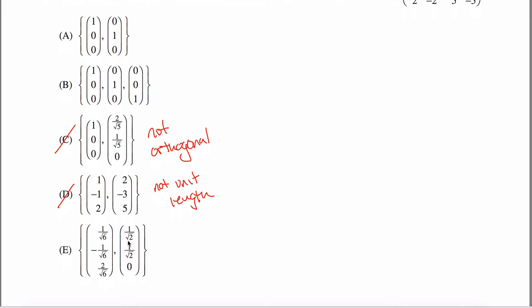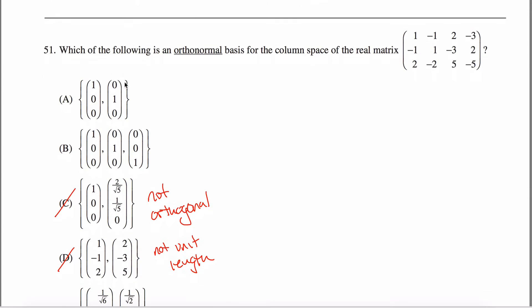Two of these three have two vectors, whereas the other one has three vectors. So if I could just figure out how many vectors, what dimension this basis should be, I can eliminate another possibility, maybe two or maybe just one. Anyways, let's get going. Which of the following is an orthonormal basis? So the way you can find an orthonormal basis is by using this thing called the Gram-Schmidt process.